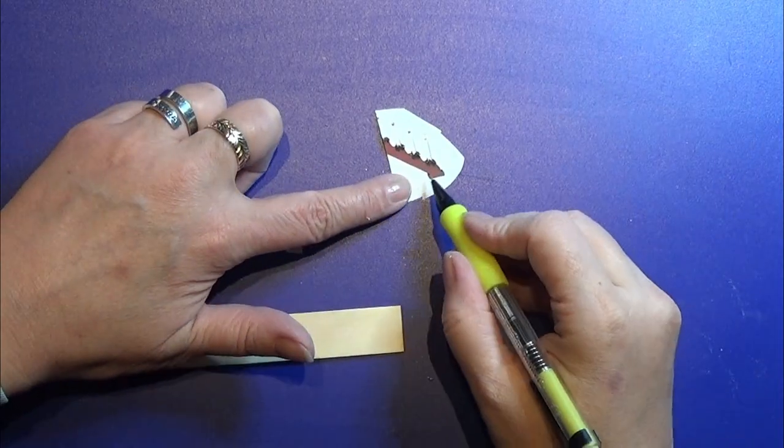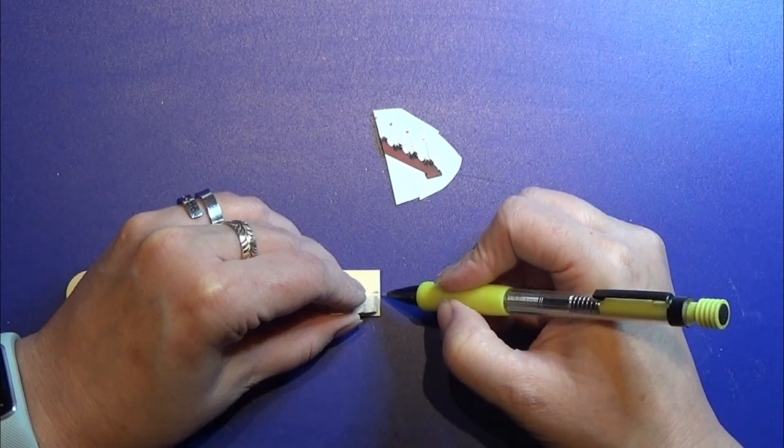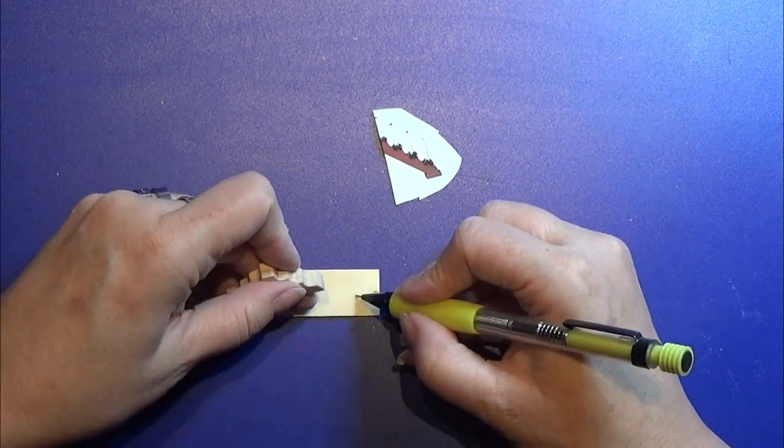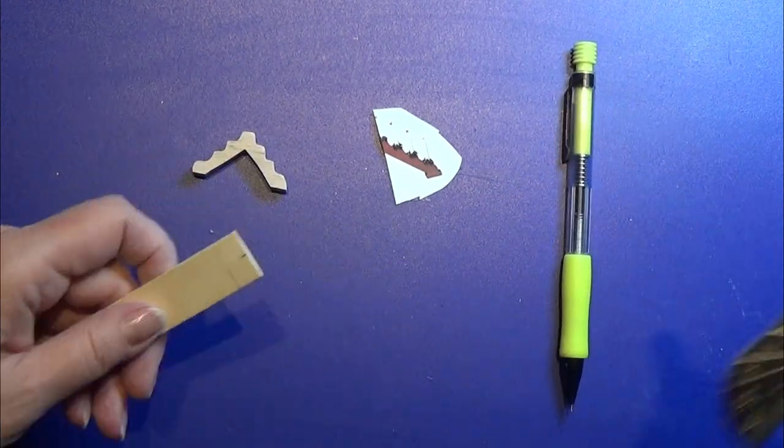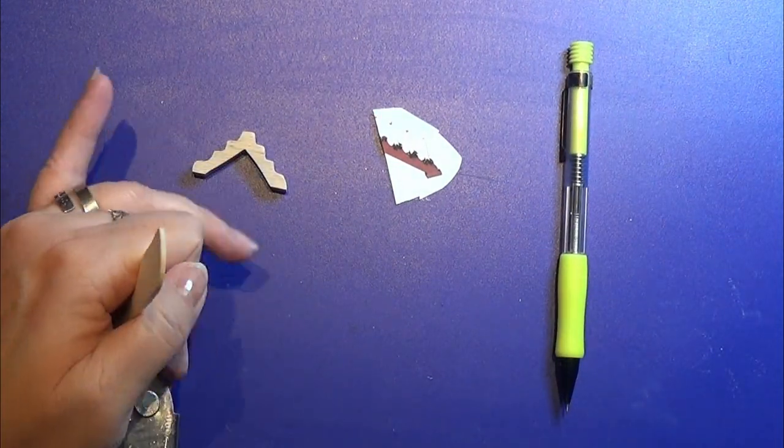I sanded the piece a bit, and then I am going to cut out two small feet for it. I am using my easy cutter to cut out the feet from a piece of an icicle.